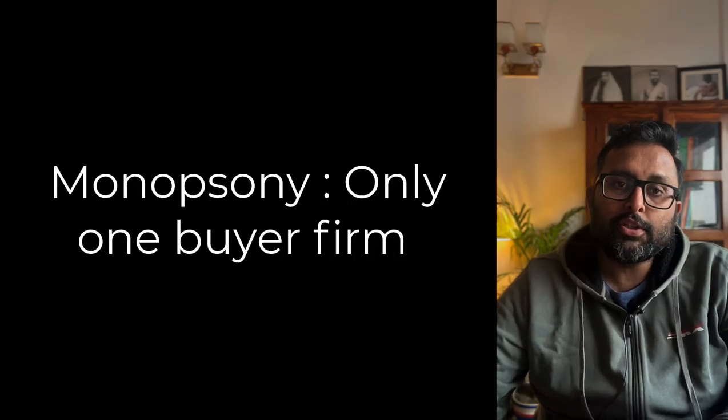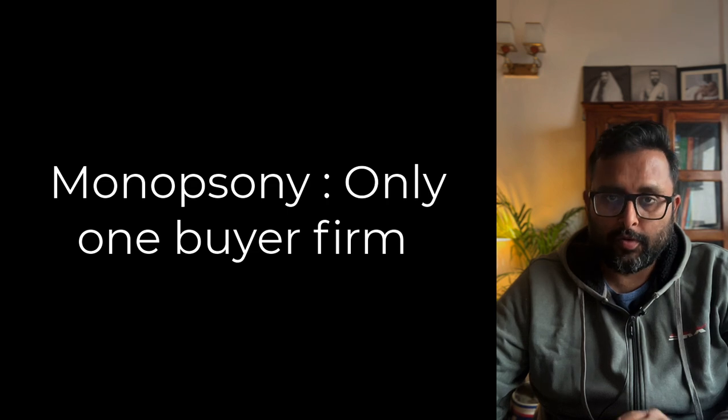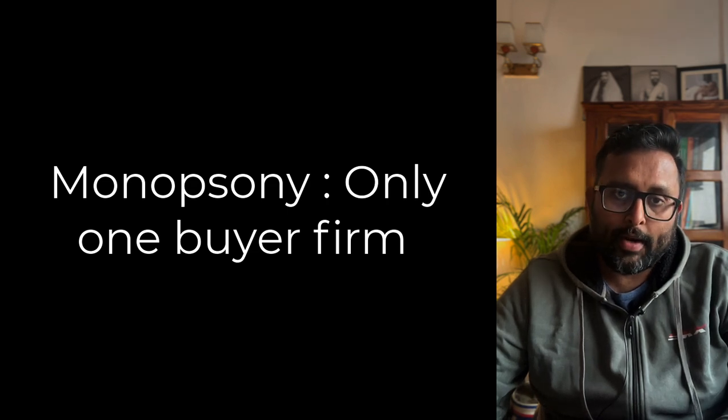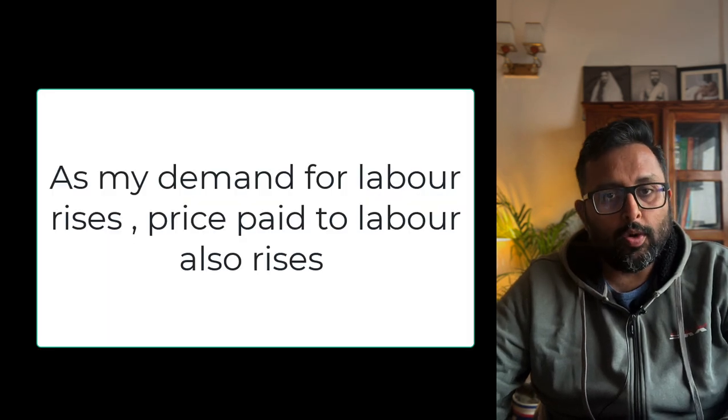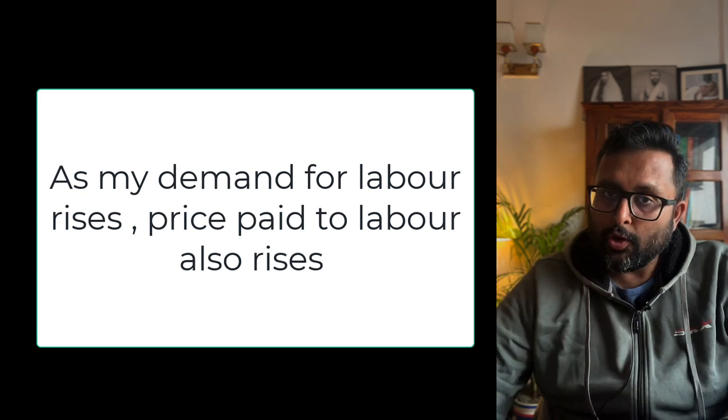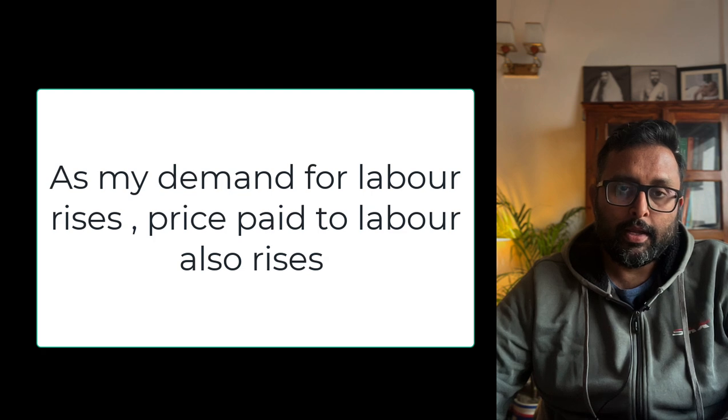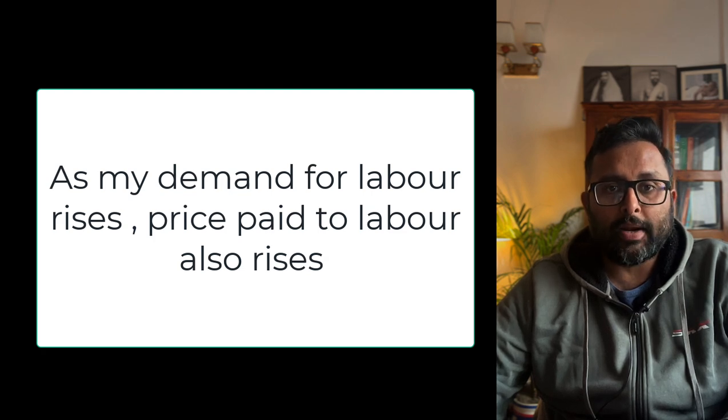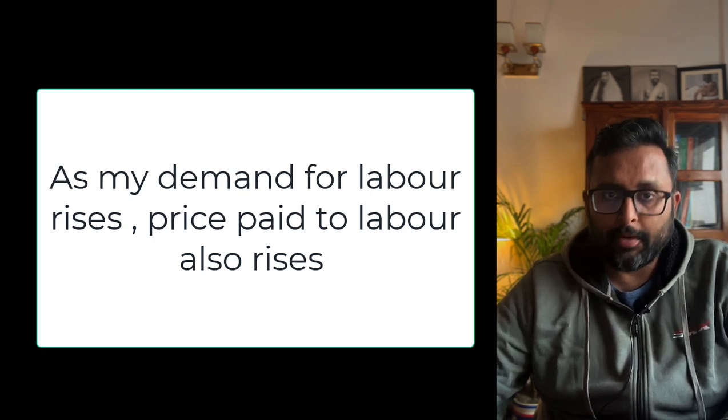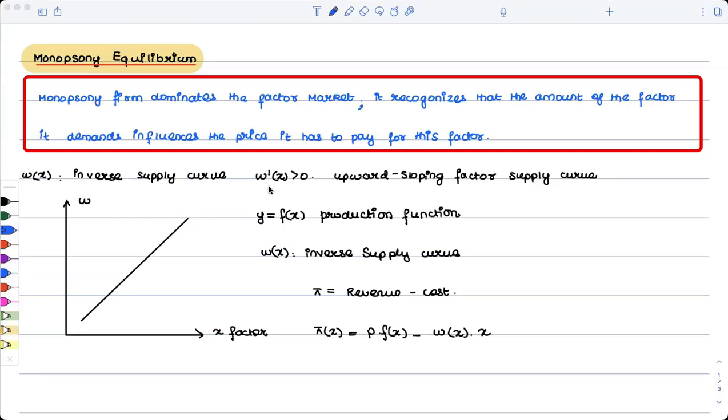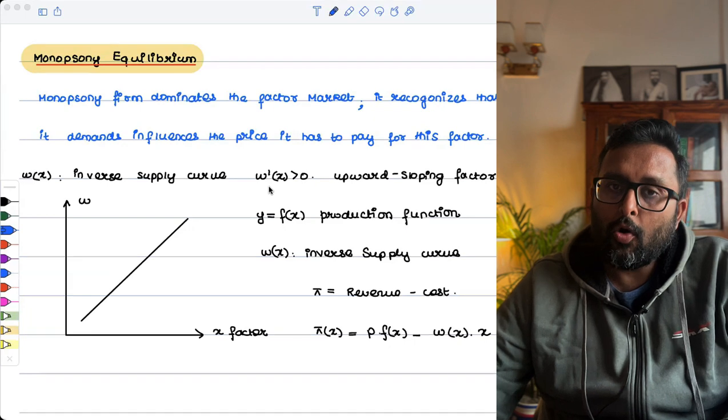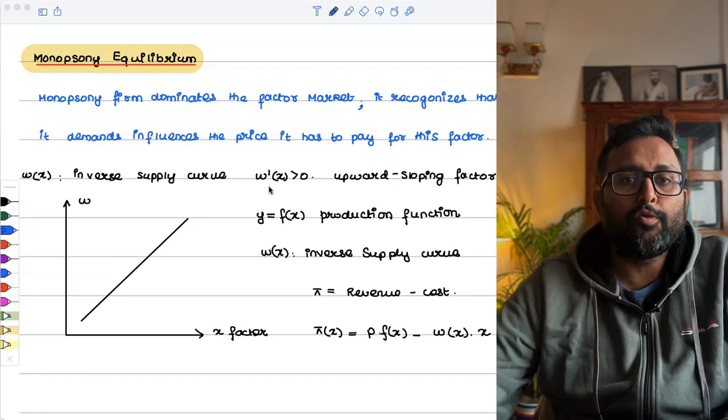How to find out equilibrium in monopsony? Monopsony is the case in which there is only one buyer firm. Supposedly, I am that one buyer firm, and you guys are the inputs. So what I know is that my demand for labor is going to affect the price which is going to be paid to the labor. If I am going to demand more labor, I will have to pay them high price.